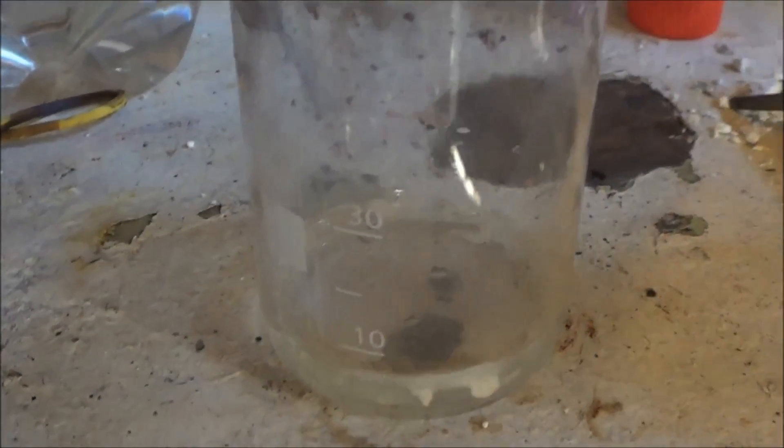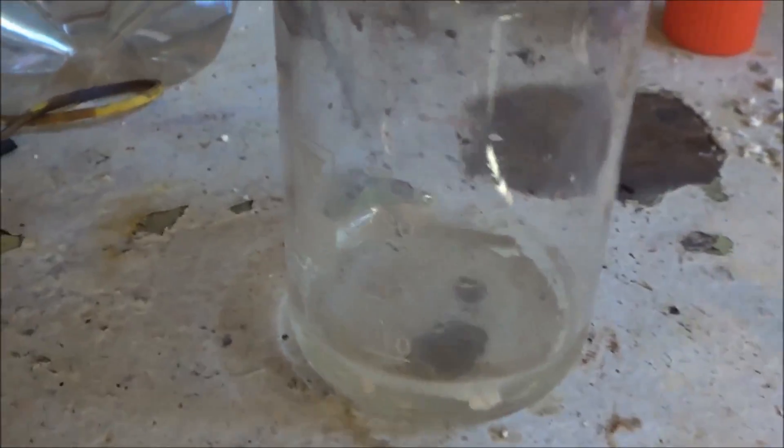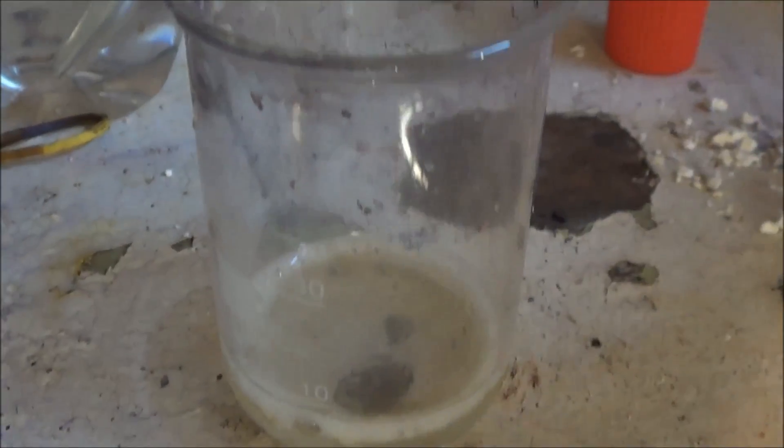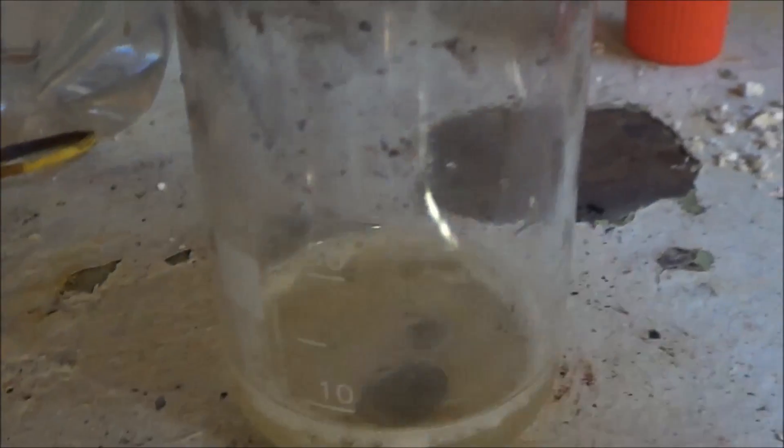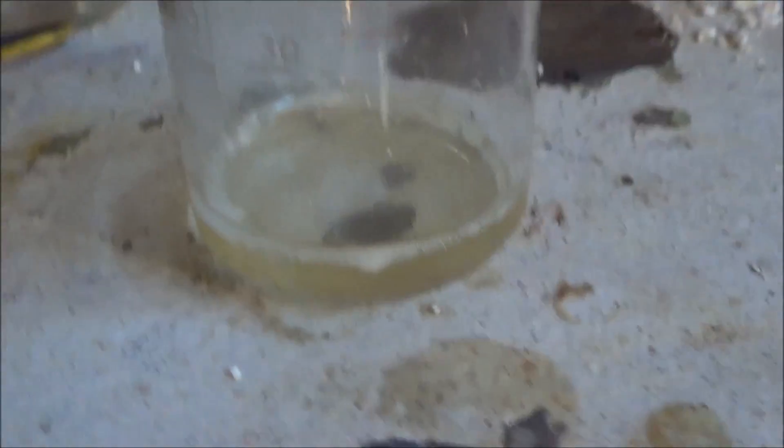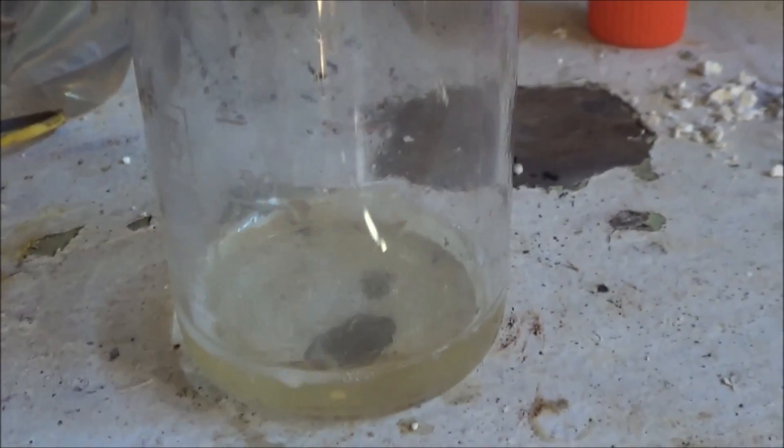Now we have some hydrochloric acid here, and if we add some of our white powder from the paddock, we can see it bubbles quite violently, releasing CO2, so it's calcium carbonate. If it was calcium oxide it would react but it wouldn't bubble like that, so that's a pretty easy test to do.